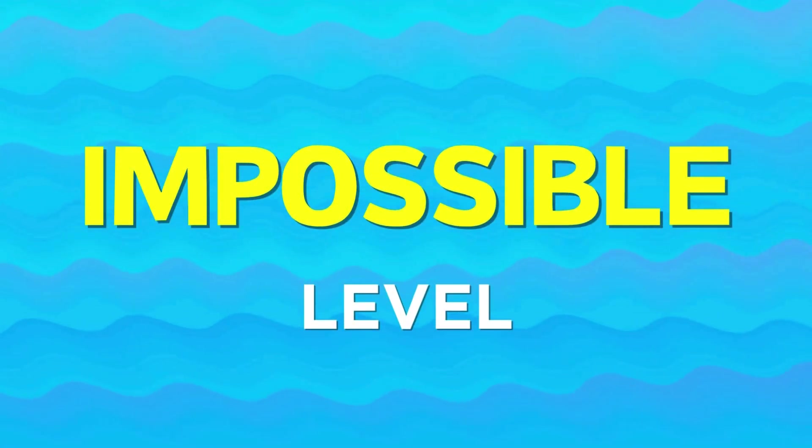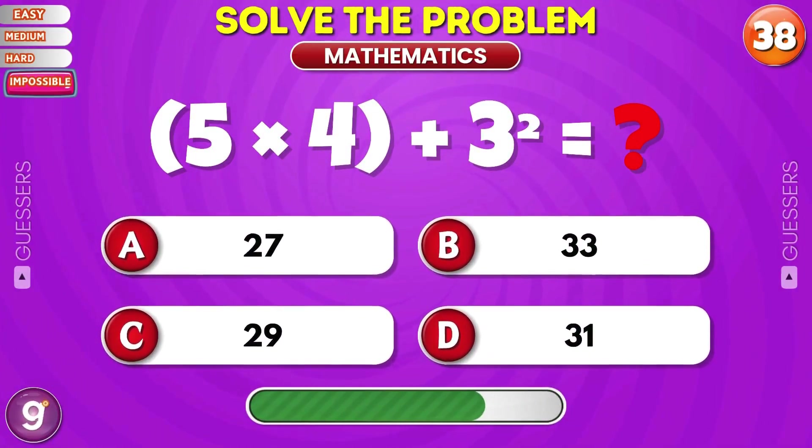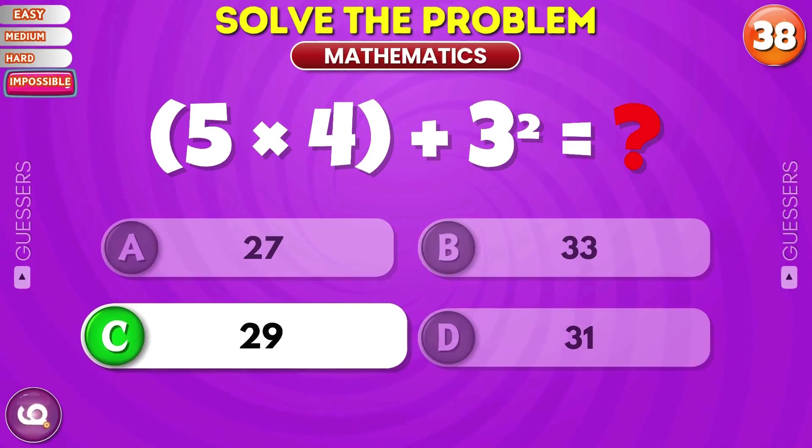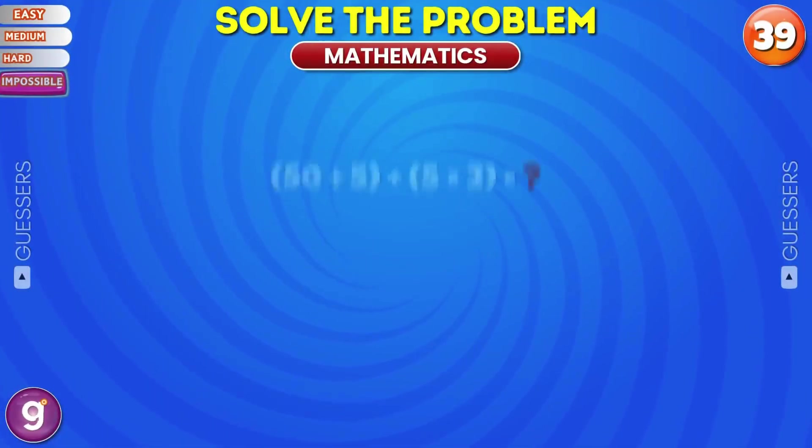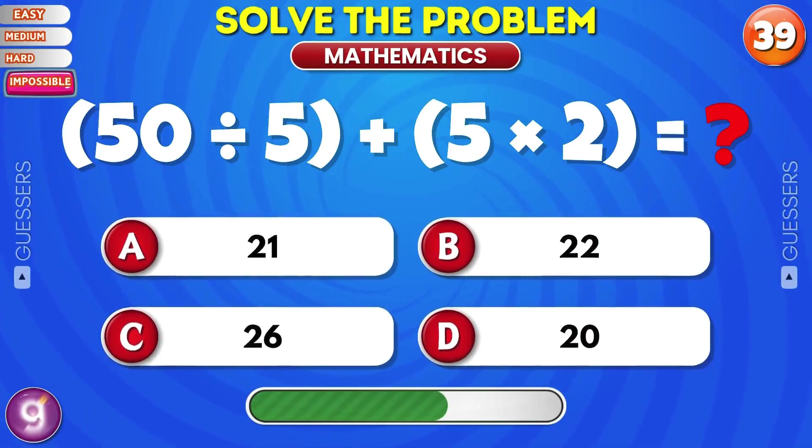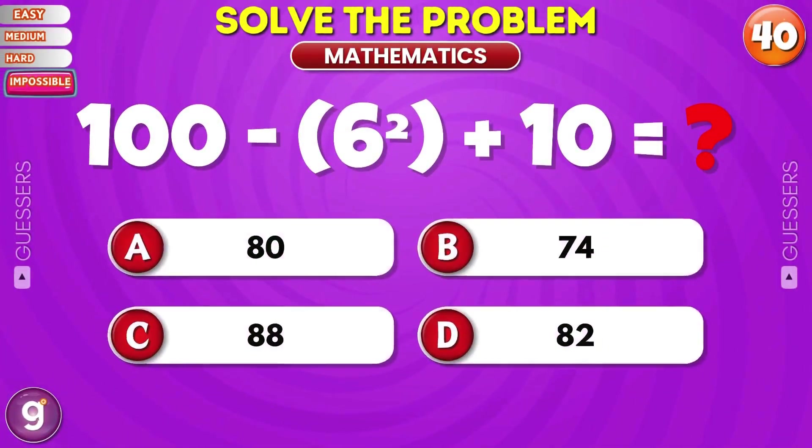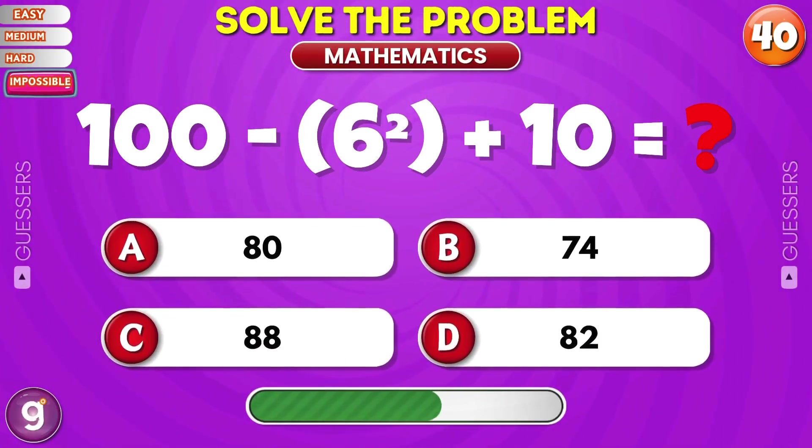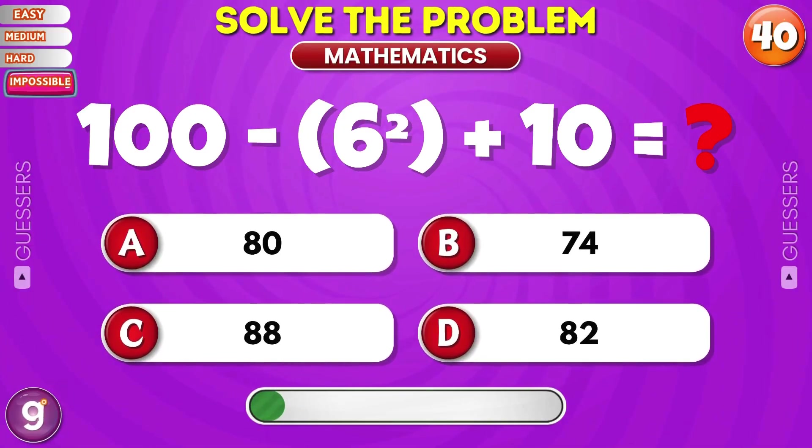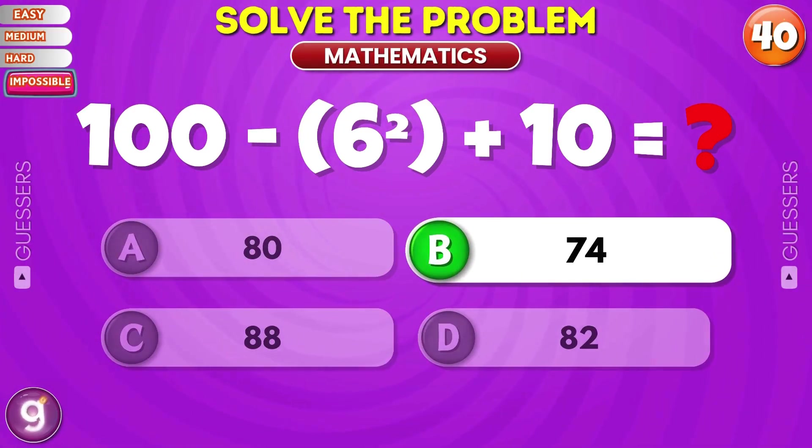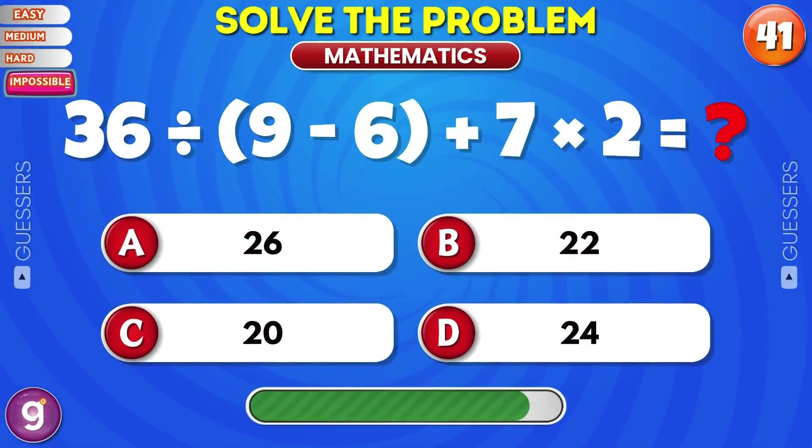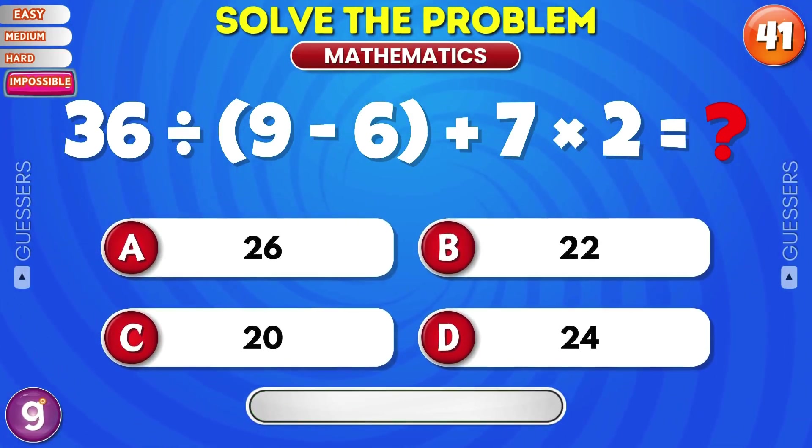Here comes the impossible level. What about this equation? 29. What's the answer? 20. 100 minus 6 squared plus 10. 74. 36 divided by 9 minus 6 plus 7 times 2. 26.